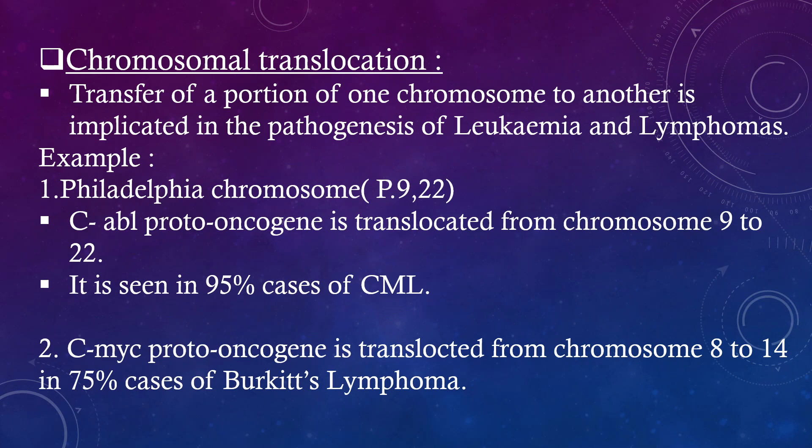Chromosomal translocation: transfer of a portion of one chromosome to another is implicated in the pathogenesis of leukemia and lymphomas. Example: Philadelphia chromosome P922 — CABL proto-oncogene is translocated from chromosome 9 to 22, seen in 95% of CML cases. CMYC proto-oncogene is translocated from chromosome 8 to 14 in 75% of Burkitt's lymphoma cases.